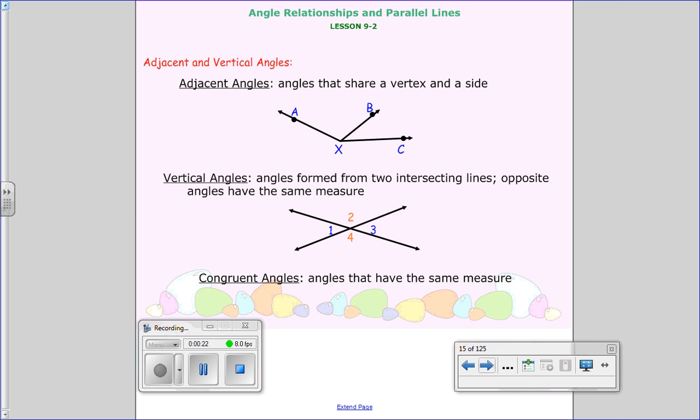First we're going to look at adjacent and vertical angles. When they talk about adjacent angles they mean angles that are really right next to each other. They're almost two small angles that are connected by a side. Their definition are angles that share a vertex and a side. A vertex is this point right here. So here would be point X and here they share the side VX. Here's one angle and here is this one. So those are adjacent.